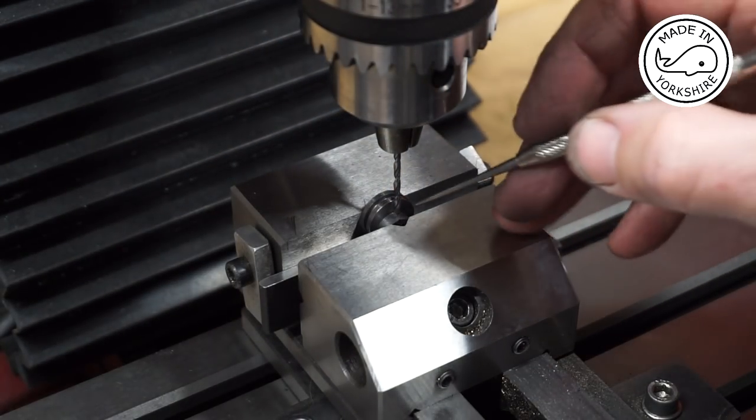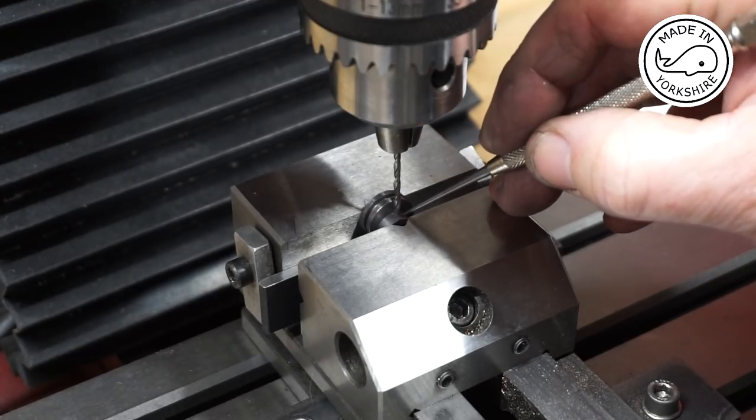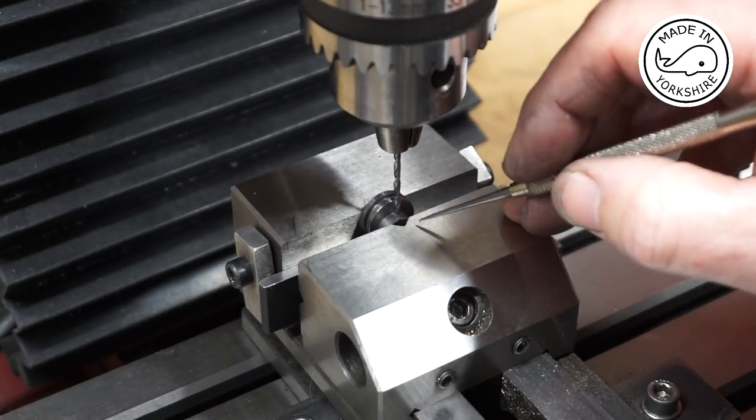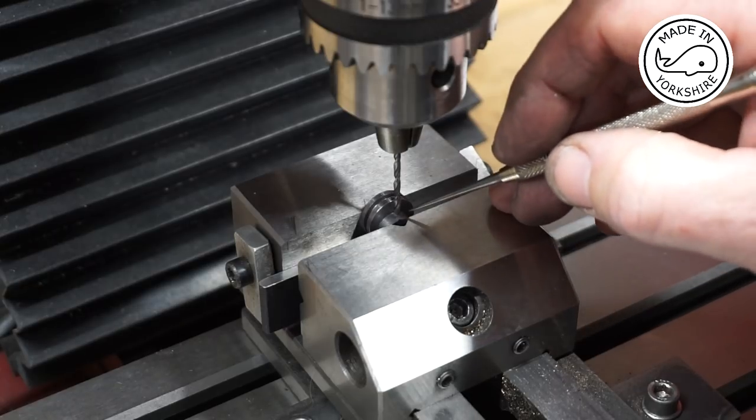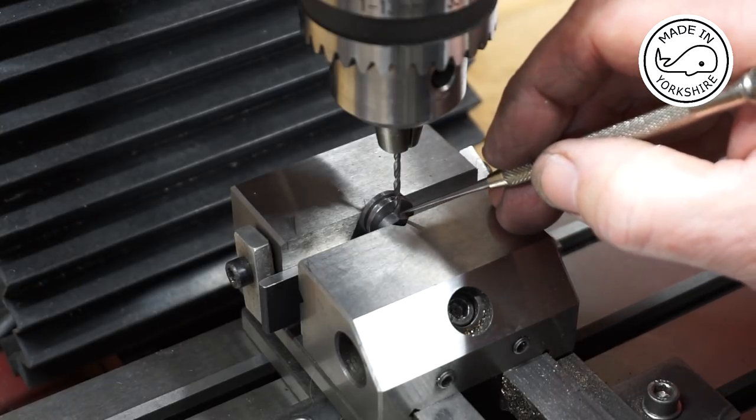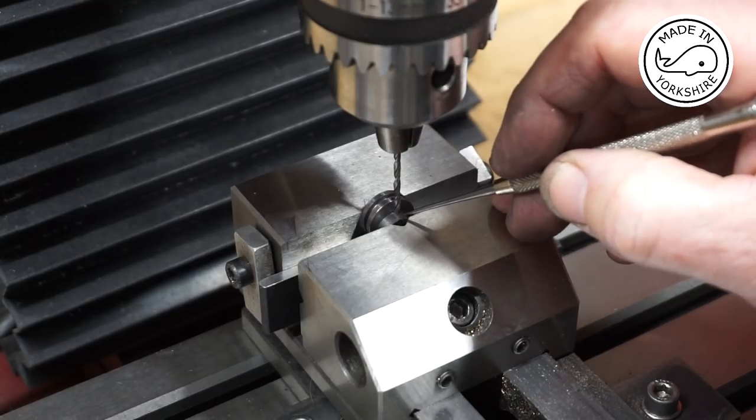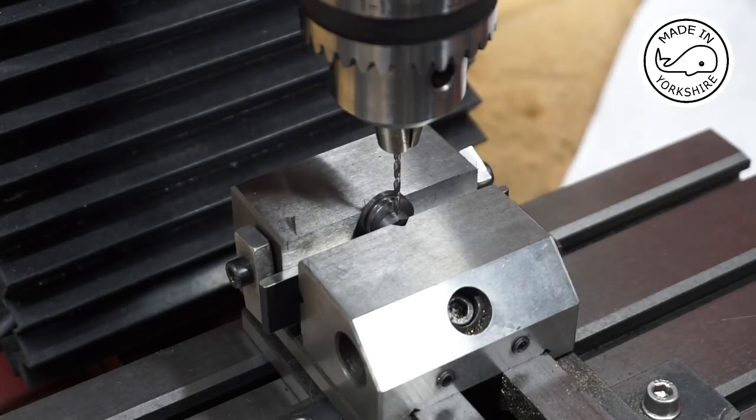Actually I've decided to tap the sheave in the area on the boss which is furthest away from this edge here. I guess that's the right place to do it. Unfortunately my centre drill isn't long enough so I'm just going to have to drill with this 2.1mm drill bit and fingers crossed it will be okay.